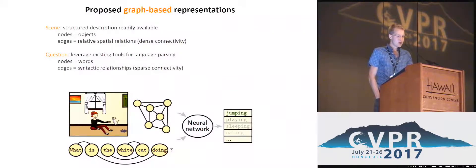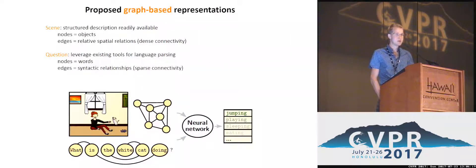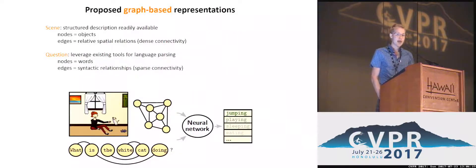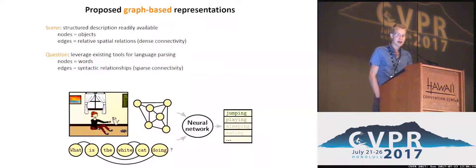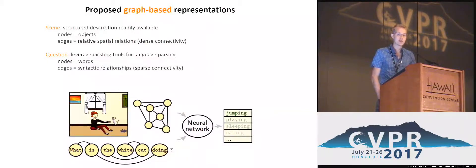For the question, we use a tool from natural language processing to parse the syntactic relationships between the words. This naturally transfers into a graph where each word is a node and each edge represents the syntactic relationships between the nodes. These two graphs are then passed to a neural network that is trained to rank a set of candidate answers and perform the actual question answering.